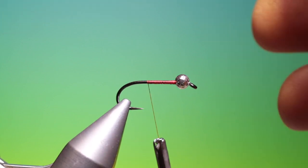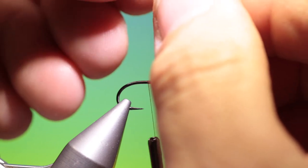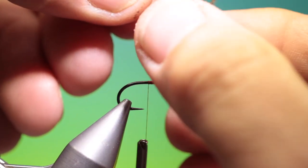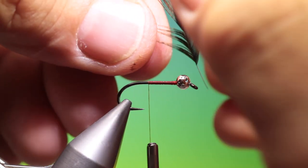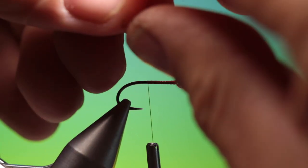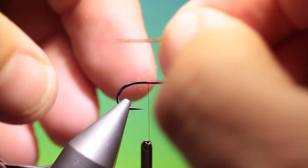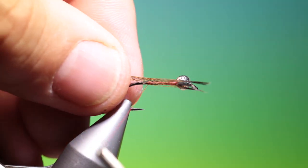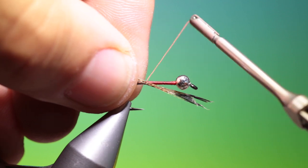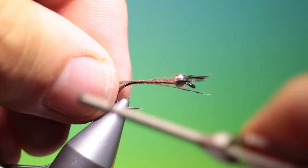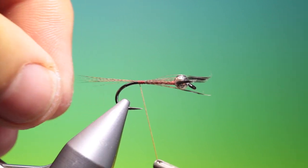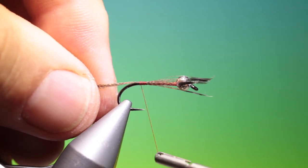Then we need a Coq de Leon tail. Pull the fibres out and level the tips like that. Pull them off. Measure the tail. At an angle, diagonally. When you tighten the tying thread it'll pull it on top of the hook shank. And we go back.